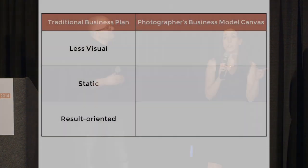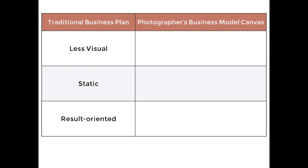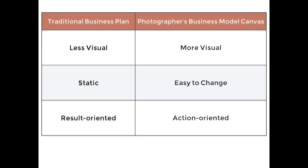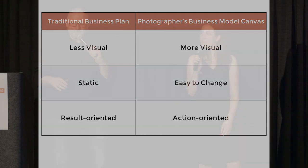So how is it different from a traditional business plan? A traditional business plan is less visual — it's a 10- to 20-page text document. It's static, it's hard to change, and it's result-oriented with charts and end-of-day results. The PBMC, on the other hand, is more visual — it's a one-page canvas, and as artists, we really dig this. It's easy to change, experiment with, and it's action-oriented. You want to focus on actions that solve problems for your clients and how.